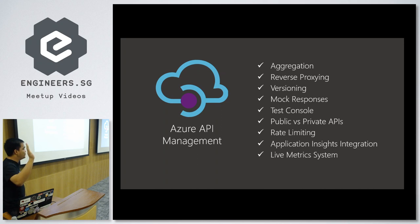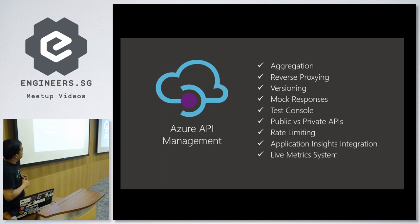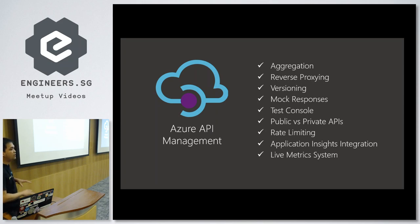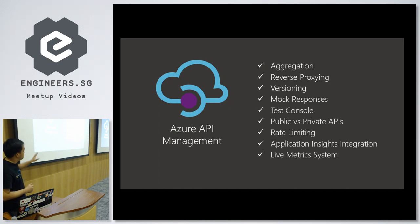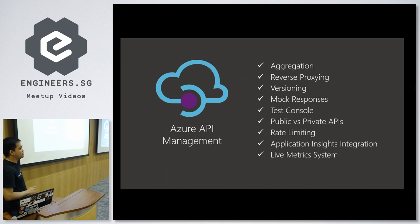How many of you have worked with APIs before and experienced a change in your API breaking client software? With Azure API Management you can also perform mock responses — you don't need to connect it with your data layer right away. You'll have a test console to ping APIs you've set up, public and private APIs, rate-limiting policies as a defense against DDoS attacks, application integration with telemetry in Azure, and live metric systems. All of this for around $50 per month.